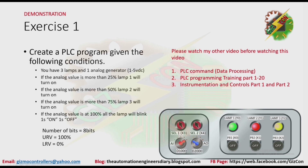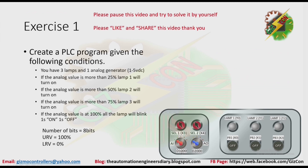Now let's try to decrease the value of the analog. And as you can see here, lamp 1, lamp 2, and lamp 3 will turn on depending on the value of the analog signal here. Please pause this video and try to solve it by yourself. Then after that, you can resume this video so that you can compare your answer to my answer.